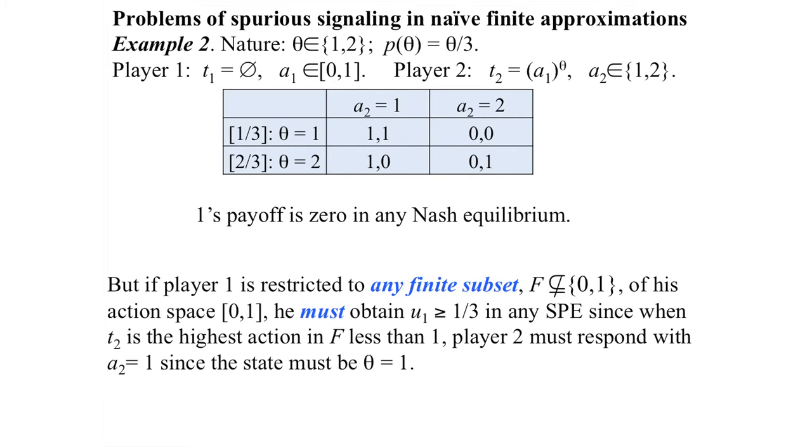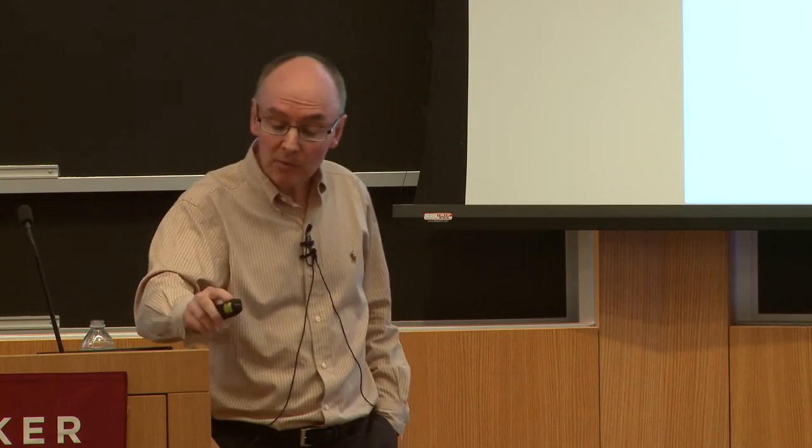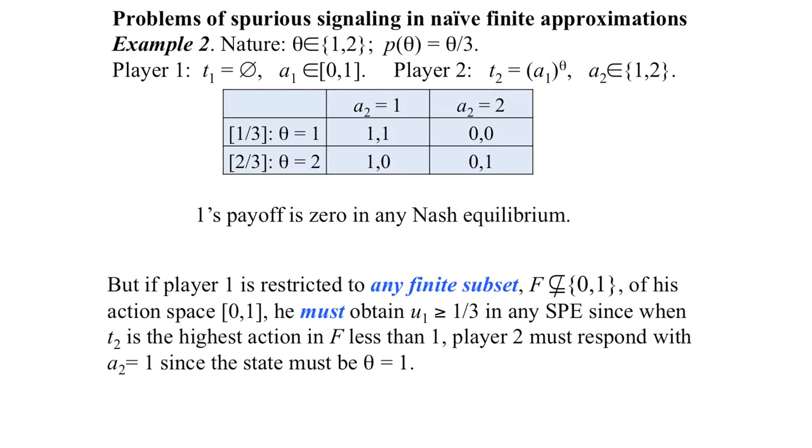One Nash equilibrium: player one chooses zero, which produces signal one no matter what, conveying no information. Player two then chooses action two no matter what, and player one gets payoff zero. So any sensible sequential equilibrium should give player one a payoff of zero or close to it.